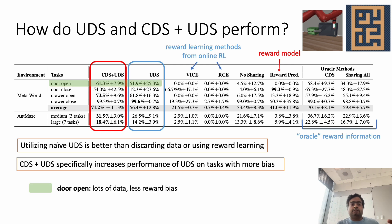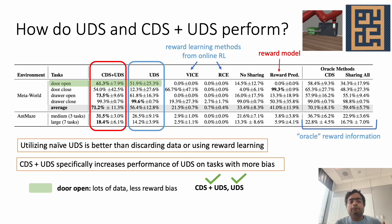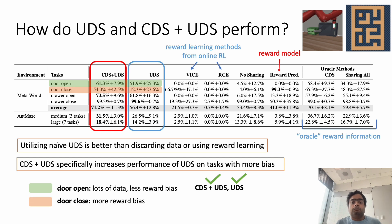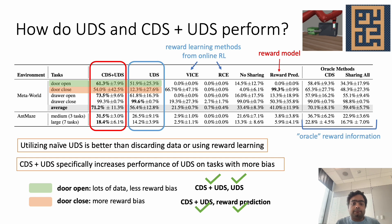For instance, in the door open task where there's lots of data and less reward bias, UDS and CDS+UDS are pretty comparable to each other, whereas reward learning is really bad. In the door closed task where there's more reward bias, UDS is much worse compared to reward prediction, but CDS+UDS can actually improve the performance of UDS quite a bit, which is quite interesting.